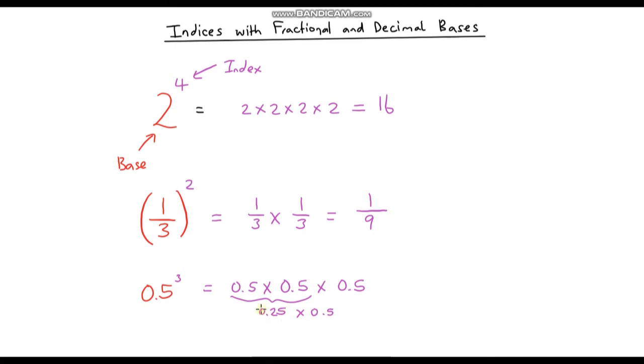So what is 0.25 times 0.5? Well it's just half of 0.25. And half of 0.25 is 0.125, which is also one-eighth. So this is our answer.